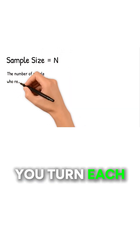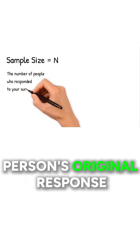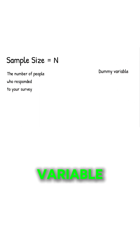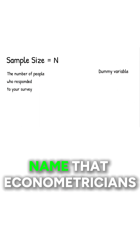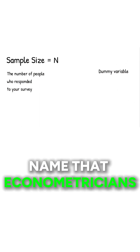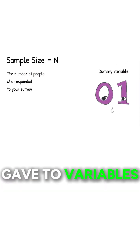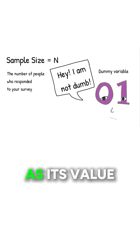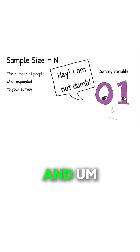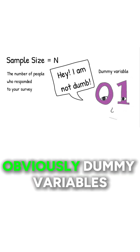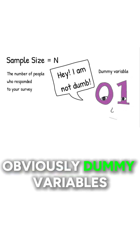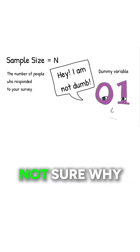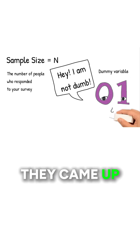After that, you turn each person's original response into a dummy variable, which is a name that econometricians gave to variables that can only take on a 0 or a 1 as a value. And obviously, dummy variables are not dumb at all — not sure why they came up with this name.